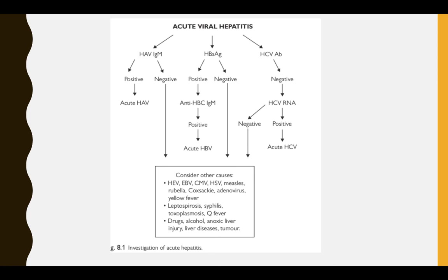You can go through the diagnostic flowchart: if anti-HAV IgM is positive, this is acute Hepatitis A; if negative, consider other causes. If the surface antigen is positive, use anti-core: if anti-core IgM is positive, this is acute HBV; if negative, look at other causes. This flowchart is for acute viral hepatitis diagnosis.